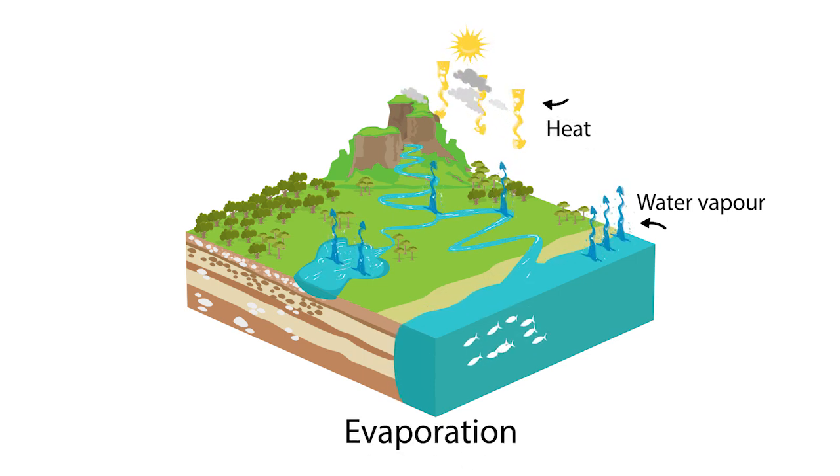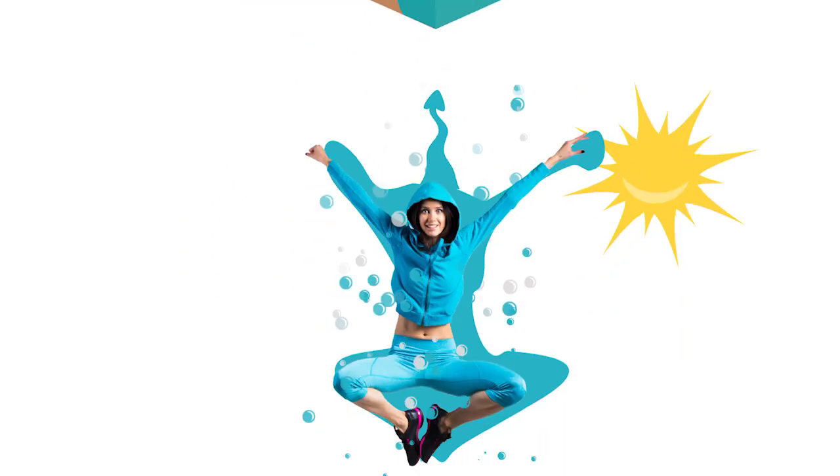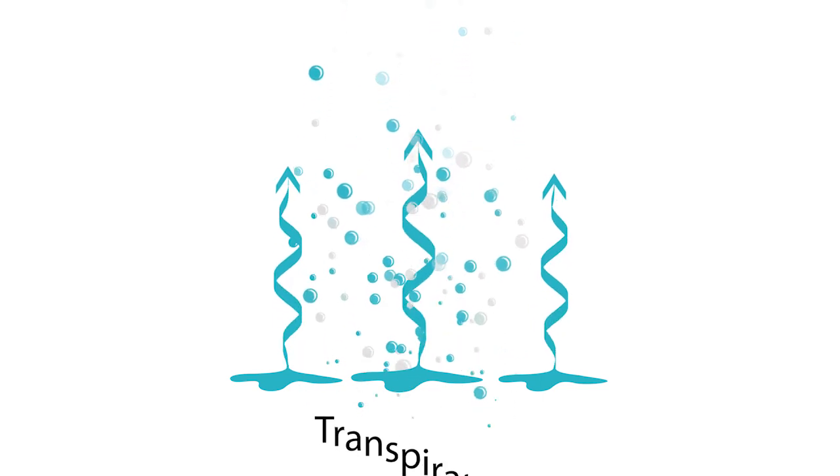The sun doesn't just heat water in oceans, lakes and rivers. When it warms people, plants and animals, they release water vapour too. This is called transpiration.